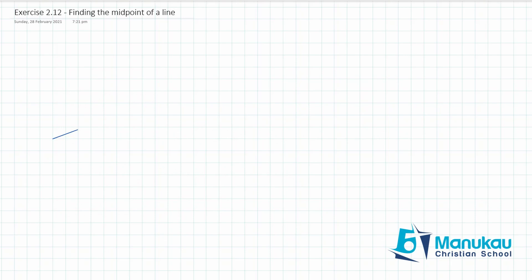Okay team, the next thing I'm going to talk to you about is finding a midpoint of a line. Let's say we've got a line like this. It goes across one, two, three, four, five, six, seven, eight, and up one, two, three, four.